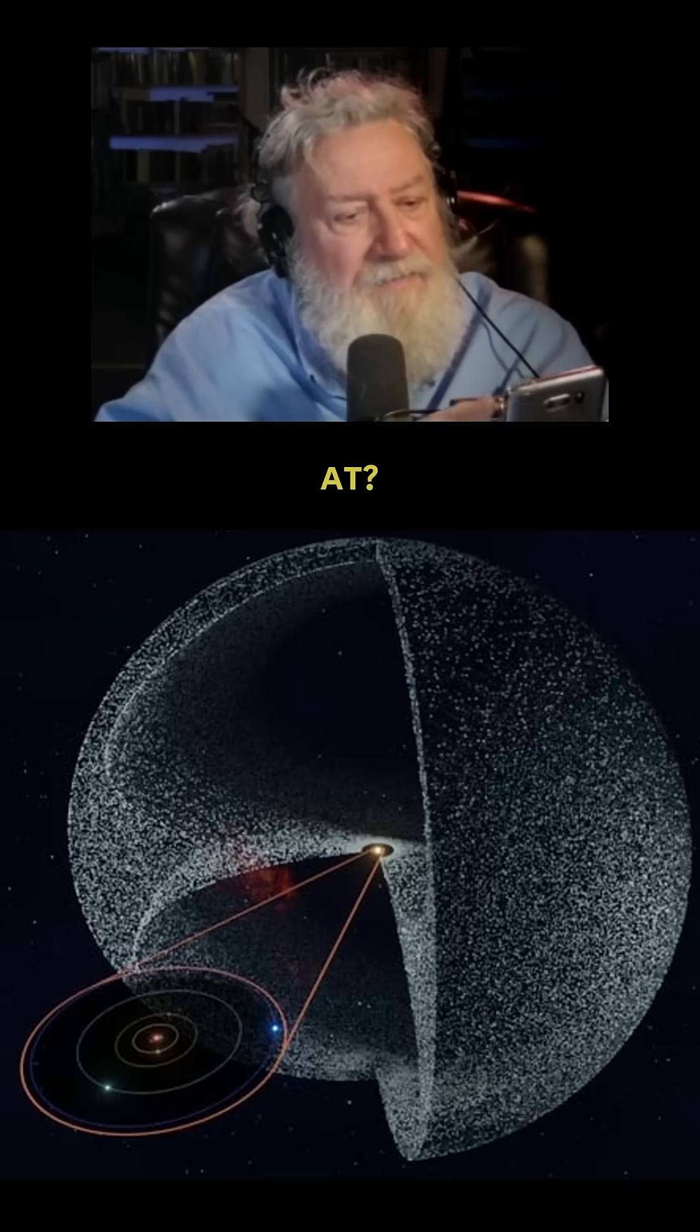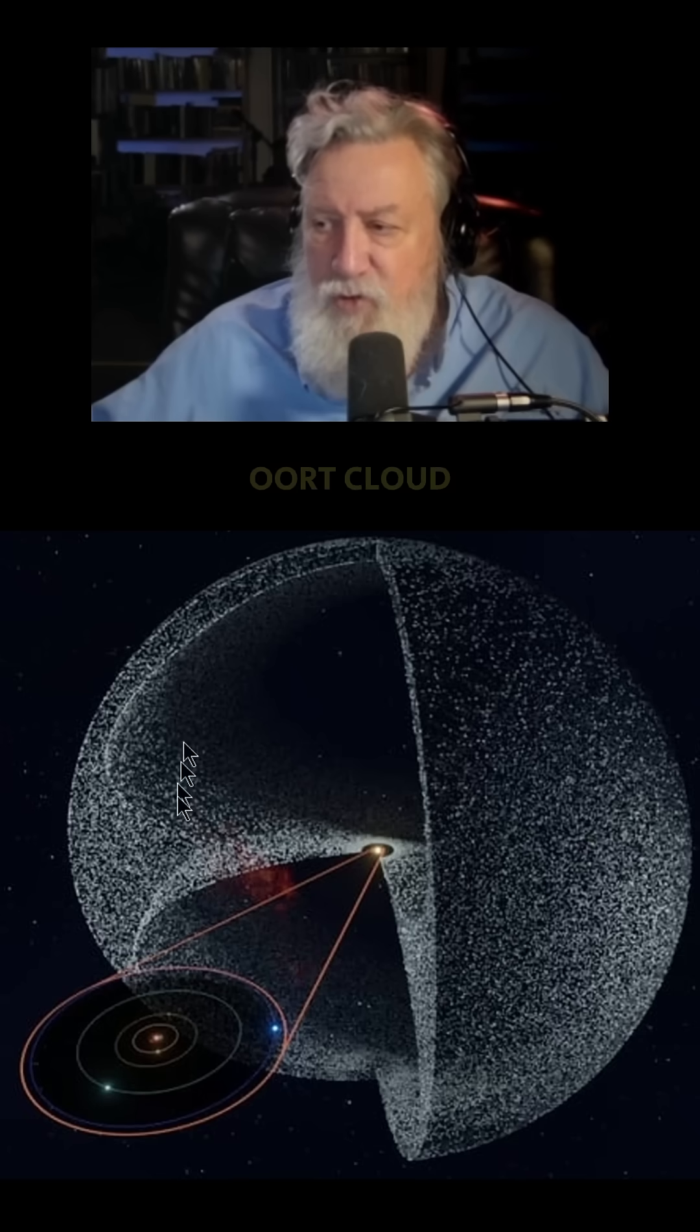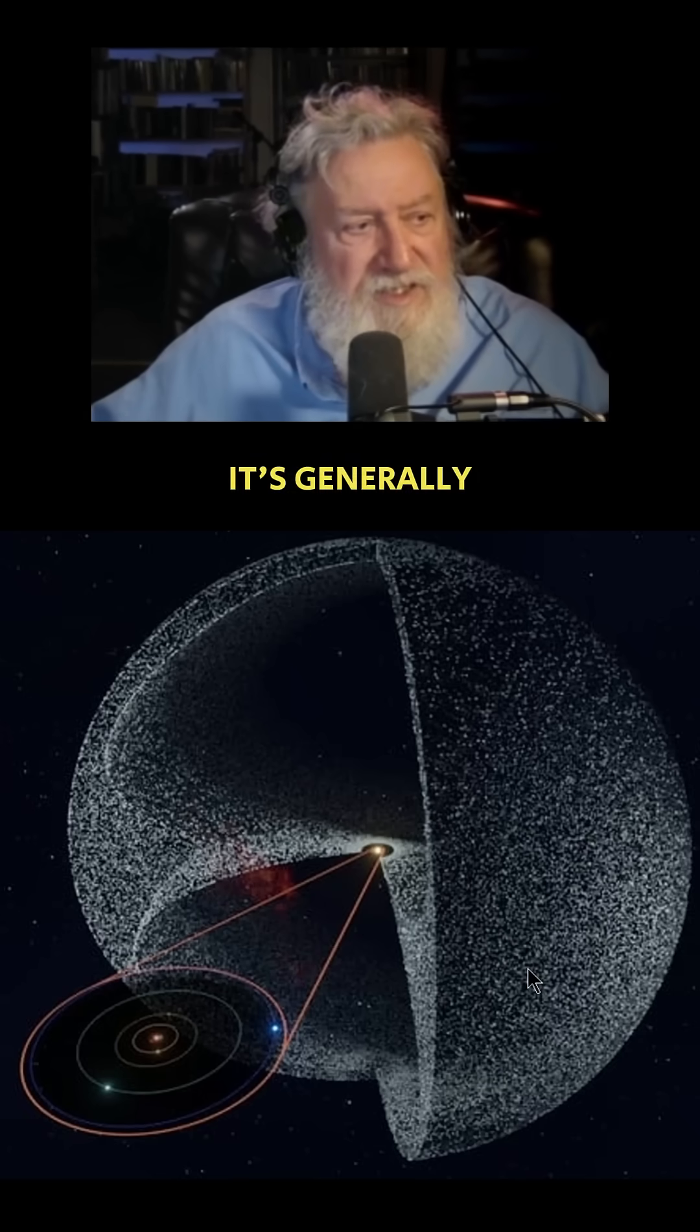What exactly it is you're looking at. You can see here, this is like a sphere. This is the Oort cloud. It's generally spherical.